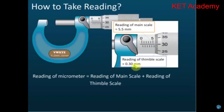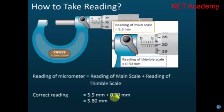With the reading of the main scale at 5.5 and the thimble scale at 0.3, the correct reading will be 5.5 plus 0.3, which equals 5.8mm. That is how we take a reading from this micrometer.